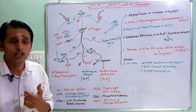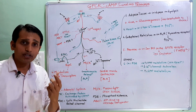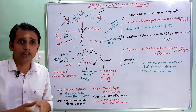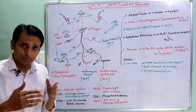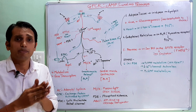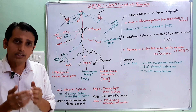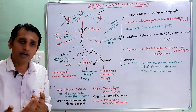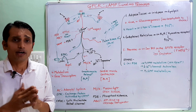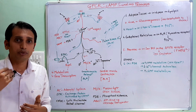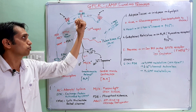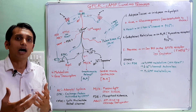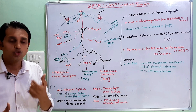Adenylyl cyclase enzyme is mainly responsible for the conversion of ATP into cyclic AMP. Cyclic AMP is the main second messenger or signaling molecule in the cyclic AMP pathway. The AC enzyme is the effector protein, and it activates the conversion of ATP into cyclic AMP, which is the main signaling molecule in this pathway.